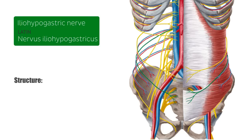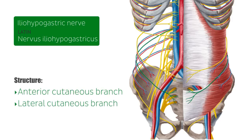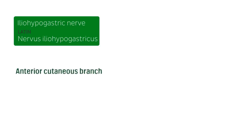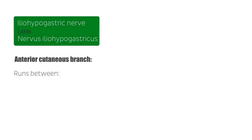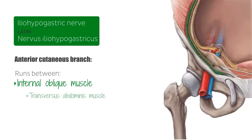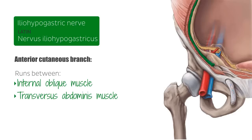At this point, the iliohypogastric nerve divides into an anterior cutaneous branch and a lateral cutaneous branch. The anterior cutaneous branch runs between the internal oblique muscle and the transversus abdominis muscle, innervating both of these muscles. It then continues through the internal oblique muscle, 2 cm medial to the anterior superior iliac spine, and passes through the external oblique muscle's aponeurosis, about 3 cm superior to the superficial inguinal ring.